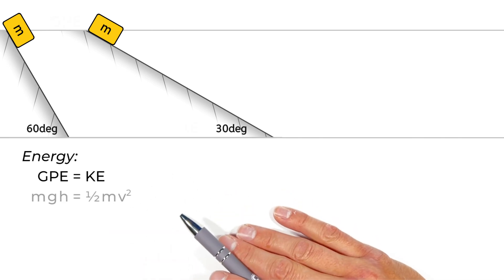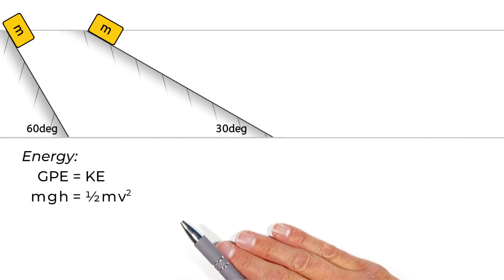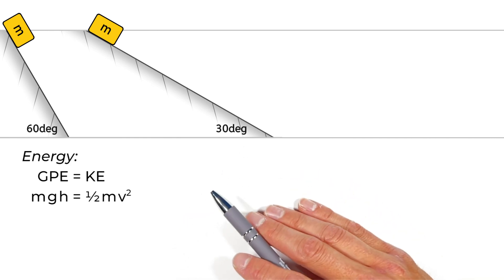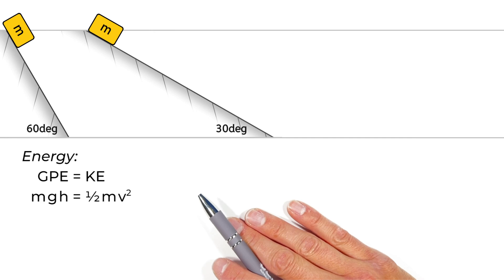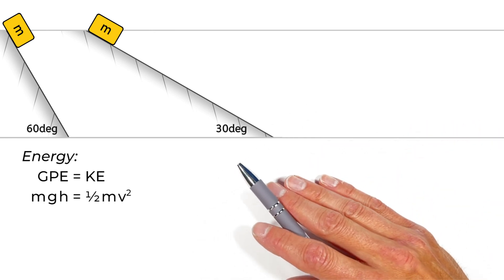Now, potential energy is given by the equation mgh and kinetic energy by one-half mv squared. I don't want to get into how to derive those here today. That's something you can look down in the description. I'll link videos on where those equations actually come from.